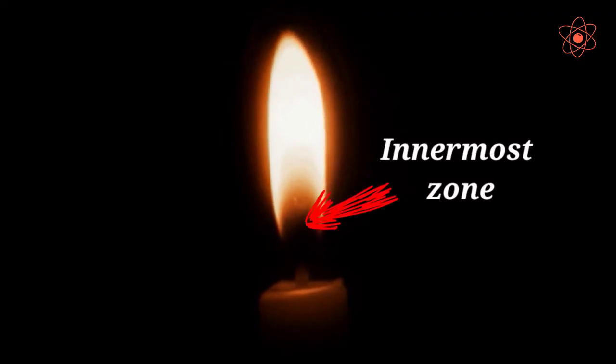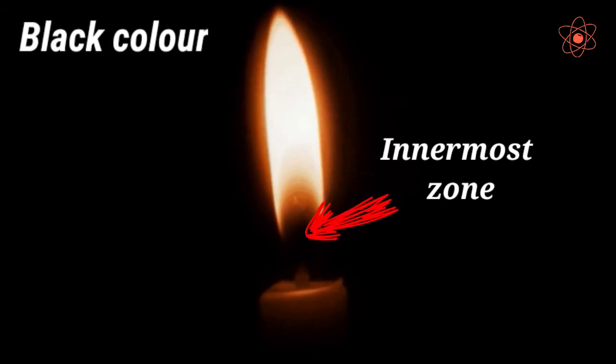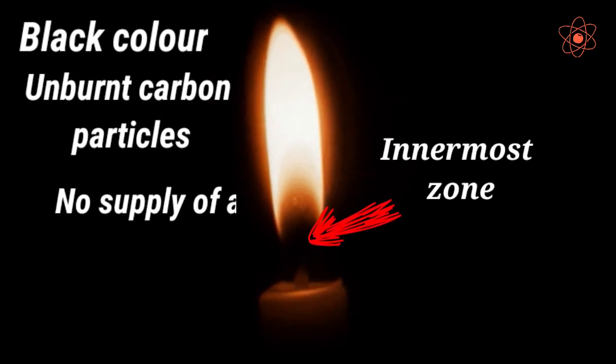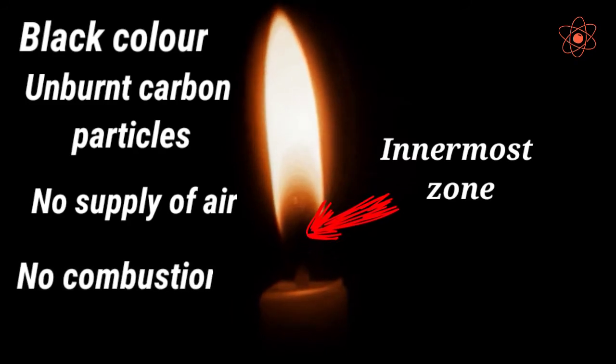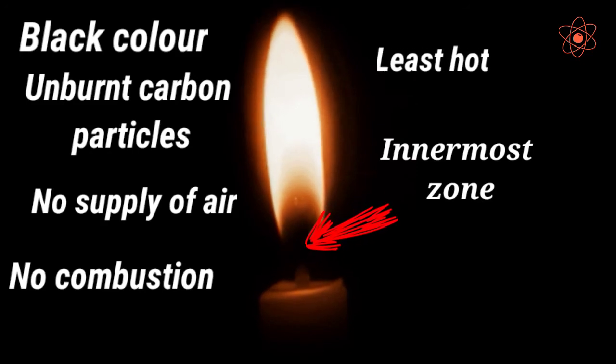This zone is just next to the wick. It is of black color due to the presence of unburnt carbon particles. There is no supply of air in this zone, so no combustion takes place. This zone is the least hot part of the candle.